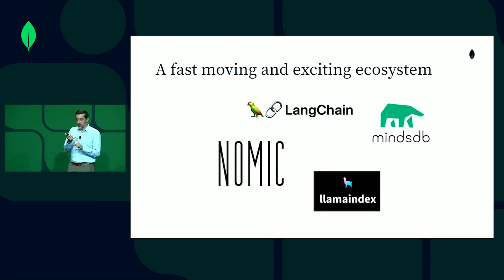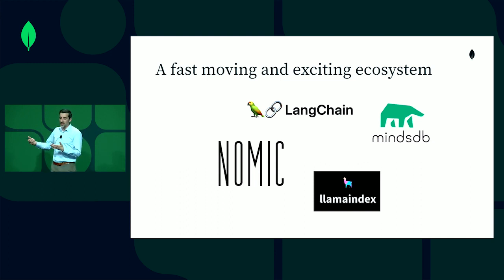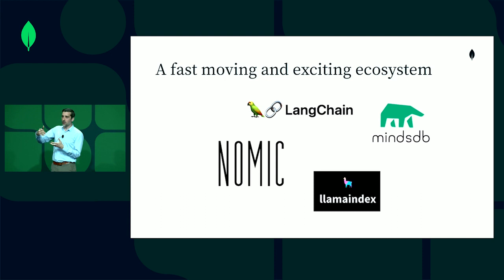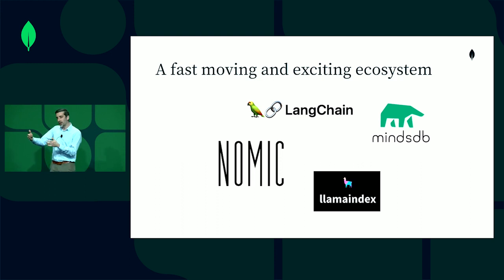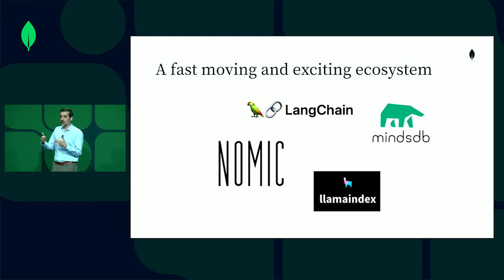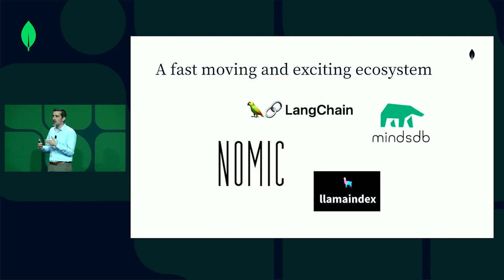We're excited to have Langchain, LlamaIndex, MindsDB, and Gnomic all partnered with us. Langchain and LlamaIndex are ways to set up and interface with large language models, as well as give those large language models the ability to connect to vector search capabilities. MindsDB is a really exciting company bringing machine learning closer to the database and making it more accessible to developers than ever before. Gnomic is a company doing visualization on top of vectors — because the minute you embed data as a vector, it becomes harder to understand how things relate to one another — and Gnomic is really revolutionizing some of the things in that space.